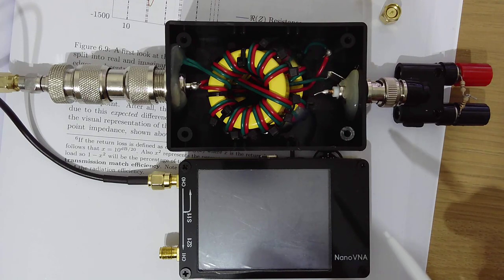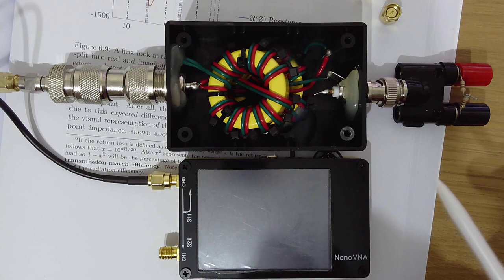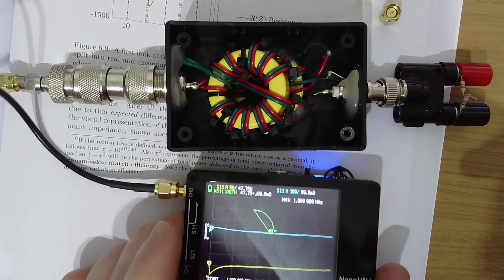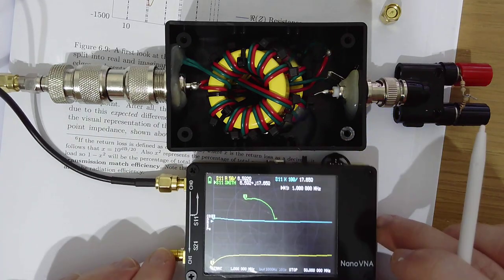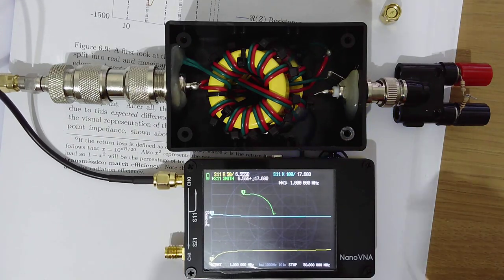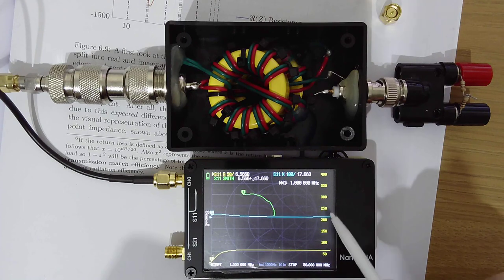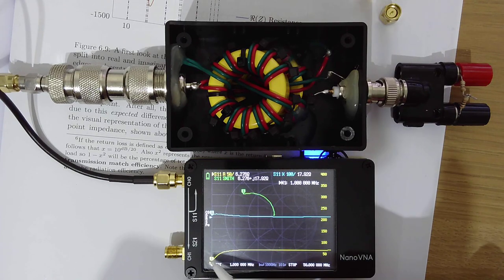So hopefully when I turn the nano vector network analyzer on, we're going to be able to see some good results. So let's go ahead and switch this on. Let's see what we get. Okay, so you can see that. So what we have in the yellow line over here, so if I just get the scale up over here.